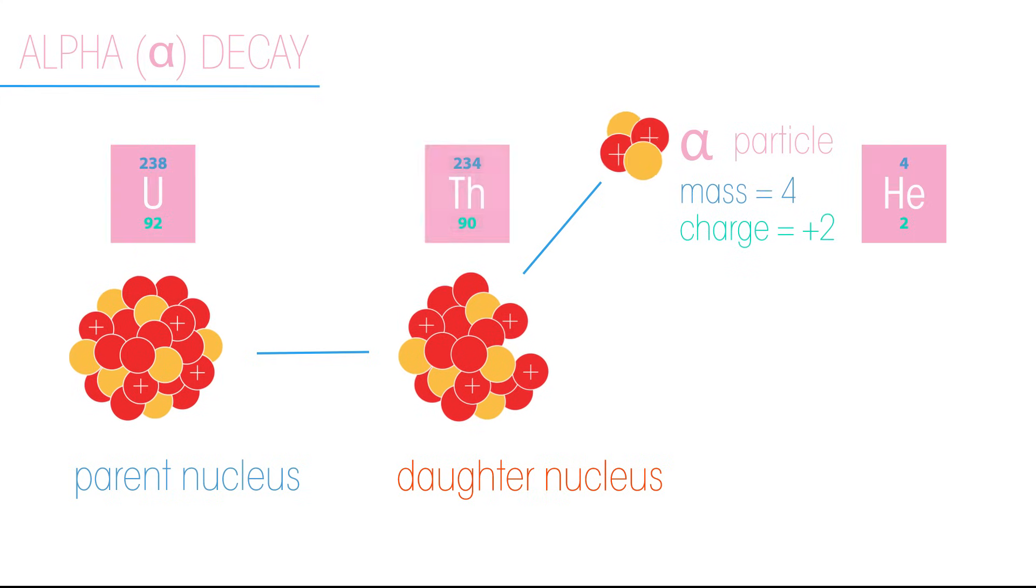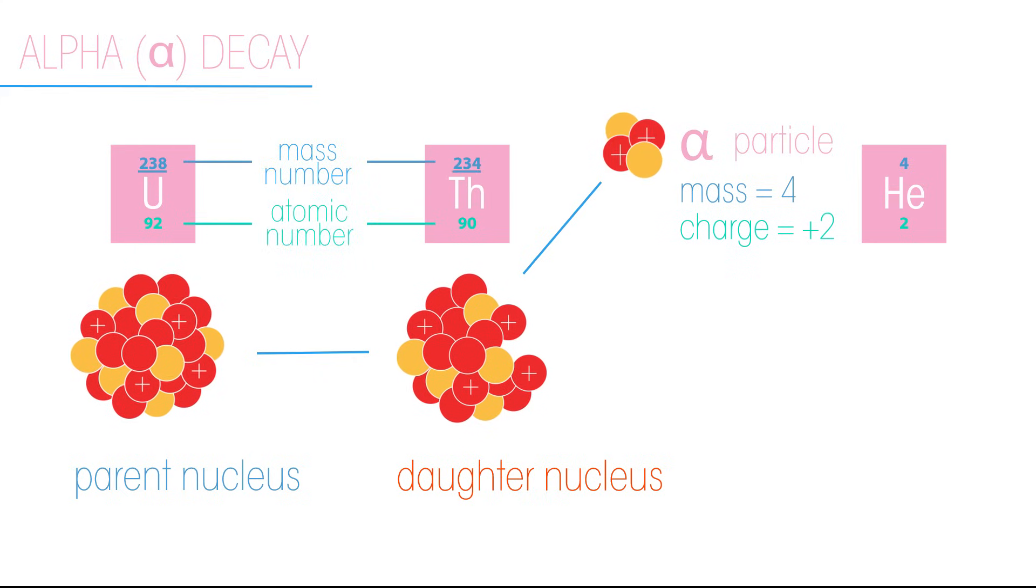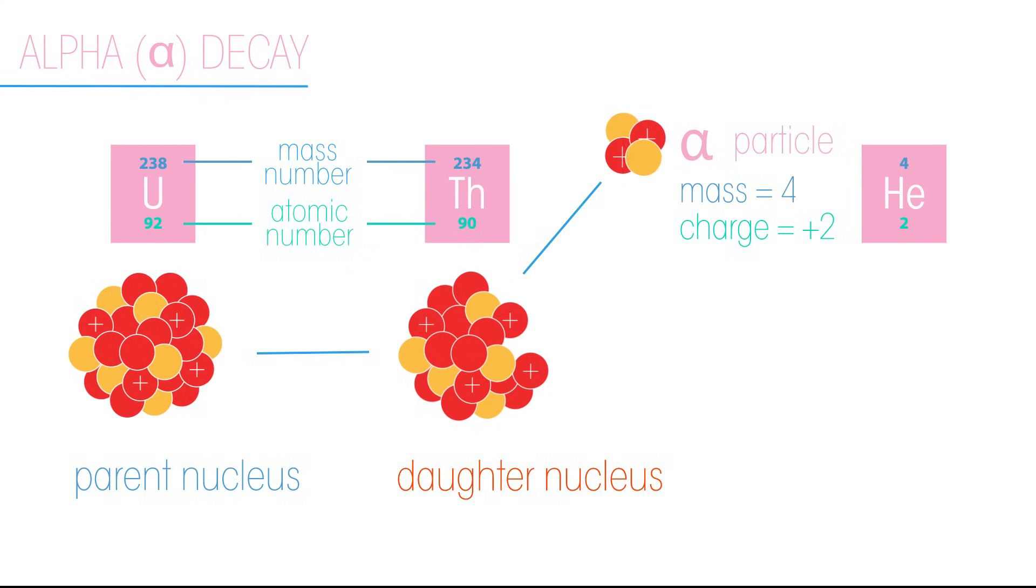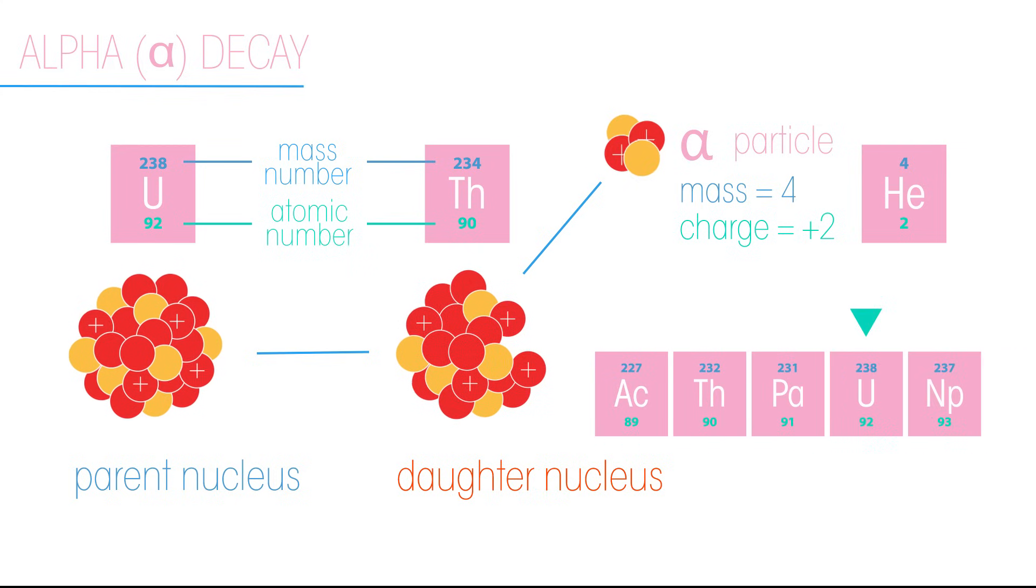When an atom loses an alpha particle, the mass number decreases by four and the atomic number decreases by two. A new element is formed that is two places lower in the periodic table.